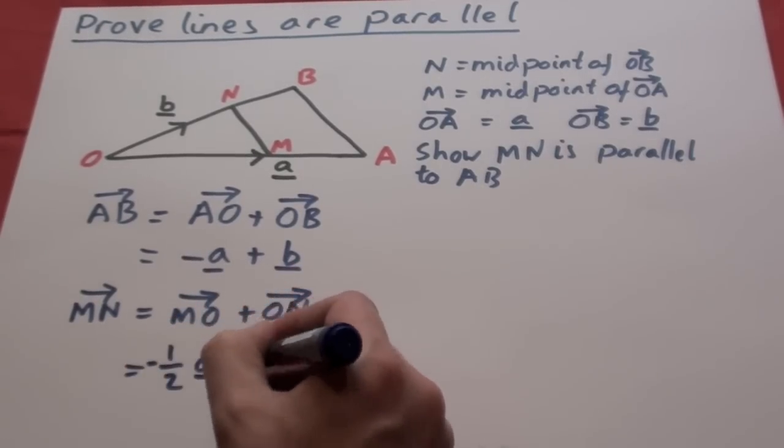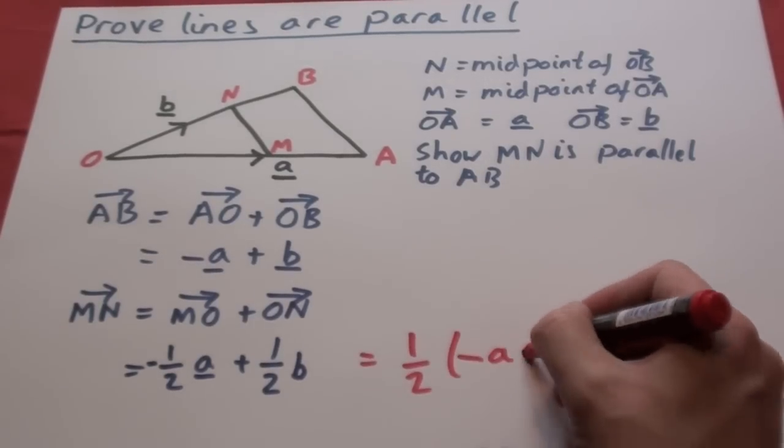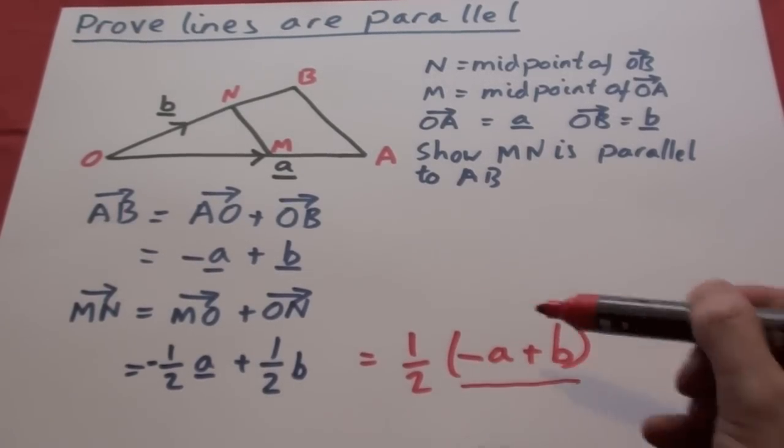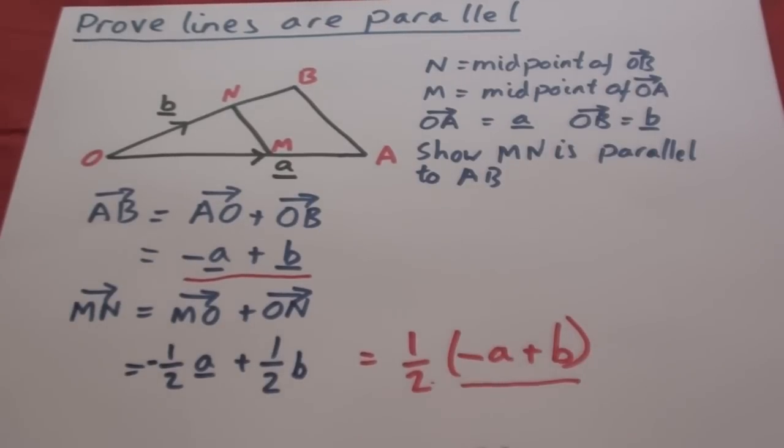Now M to O is half of A to O which is minus half of A and again minus half of B. If we take out a common factor of half, we get exactly the same vector for both. This proves it is parallel.